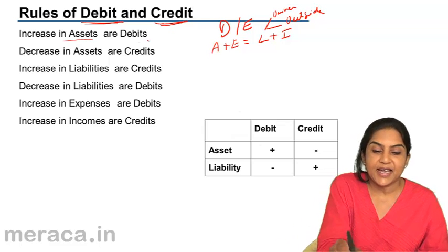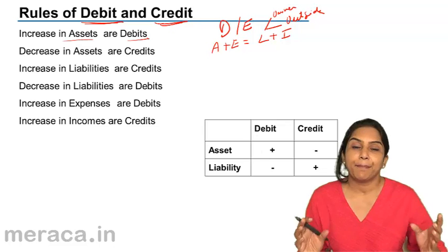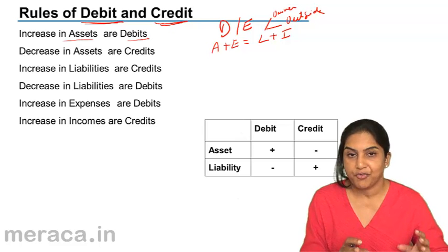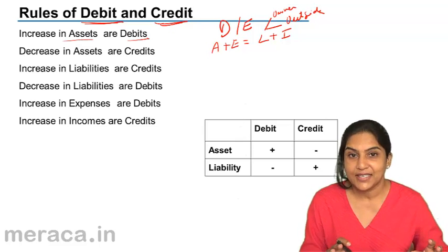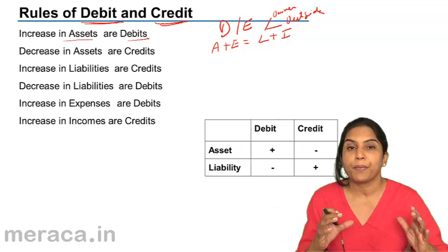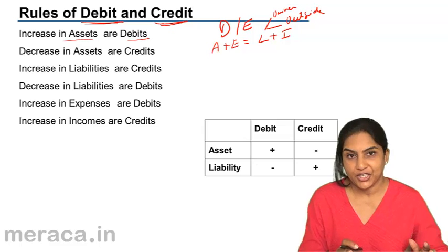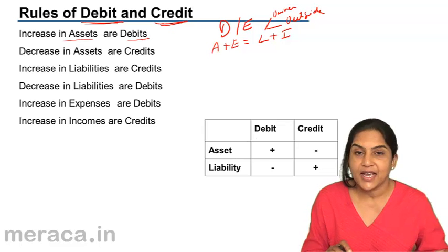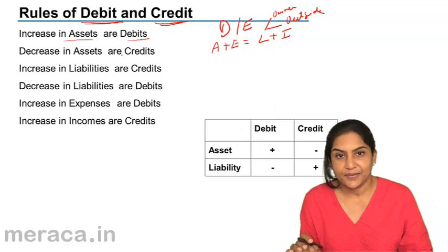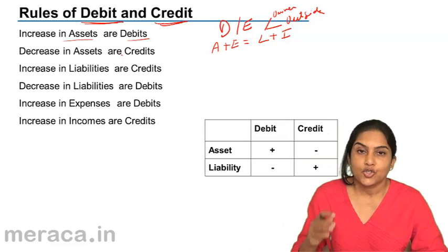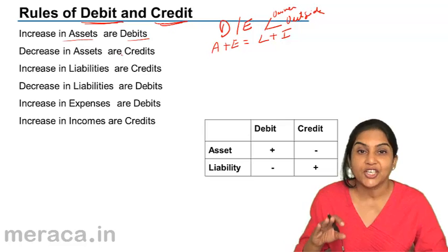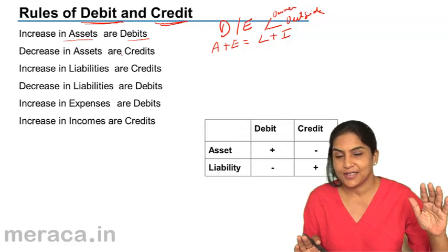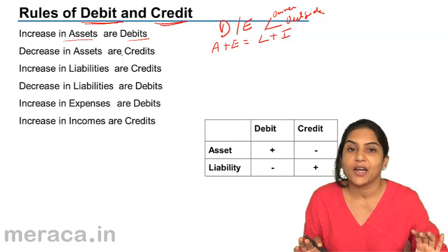Whenever there is an increase in an asset, that is debited. When cash comes in — if cash of the business is increased — asset increases, so we will debit cash. We will open what is called a cash account and debit cash. Increase in assets are debits; if increase in asset is debit, decrease in asset is credit. When we pay cash and cash comes down, we are going to credit cash.